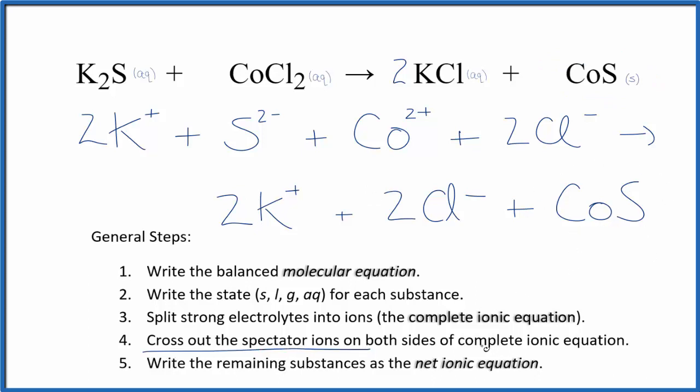Now we can cross out spectator ions, which are on both sides of that complete ionic equation. In the reactants here, I have two potassium ions. In the products, I also have two potassium ions. We can cross those out.